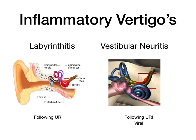Vestibular neuritis can also follow a URI, but the etiology is thought to be more specifically viral — things like hepatitis, herpes simplex, or Epstein-Barr virus getting into the vestibular nerve and causing nerve inflammation. That specifically is termed vestibular neuritis: a neuritis of the vestibulocochlear nerve. So labyrinthitis is more post-URI inflammation, while vestibular neuritis is a virus burying itself in the nerve itself.